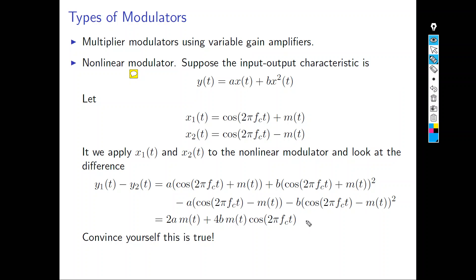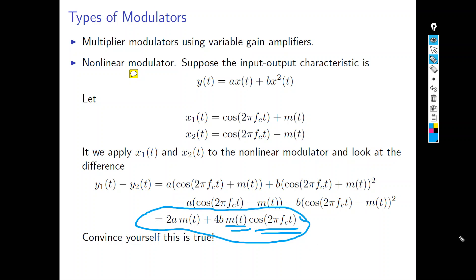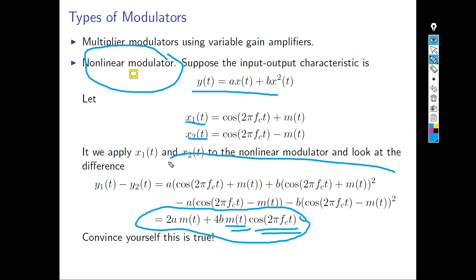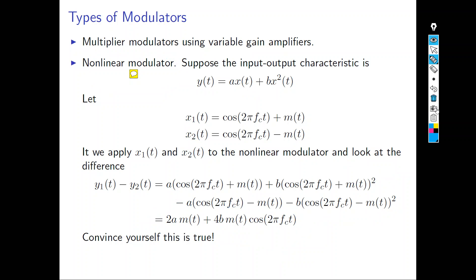The resulting signal shows that the message m(t) is multiplied by the carrier — this is the modulated signal we are looking for. So it is very possible to generate a modulated signal without using a multiplier modulator by using a nonlinear modulator. You just follow the math: define x₁(t) and x₂(t), put them into the nonlinear equation, get y₁ and y₂, subtract them, and the function reduces to the basic modulated form.